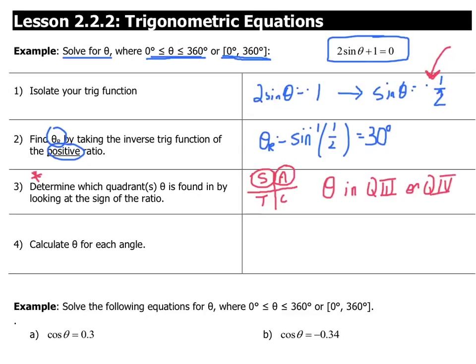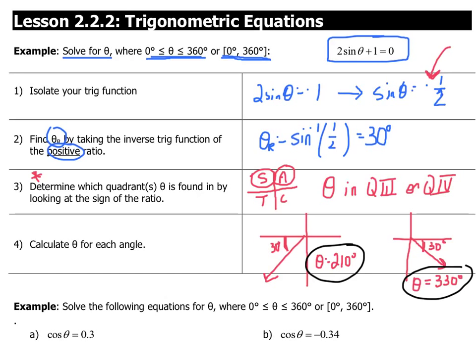And so, we now can actually find theta exactly. We know in one case, theta is going to be in quadrant three with a reference angle of 30 degrees. What is that angle theta in this case? Well, that's 180 plus 30, 210 degrees. How about in the other case? Well, if we're in quadrant four, and we have a reference angle of 30 degrees, our angle is going to be 360 minus 30. That's 330 degrees. So, the two solutions for this equation are theta equals 210, and theta equals 330.